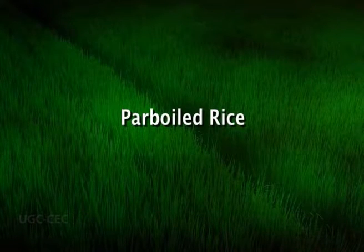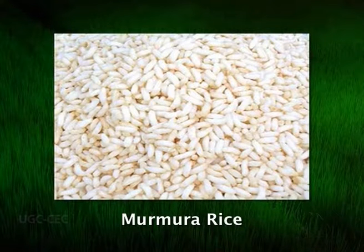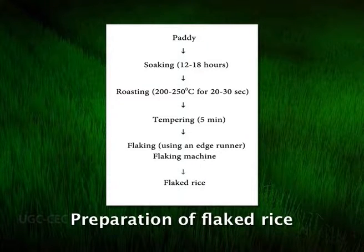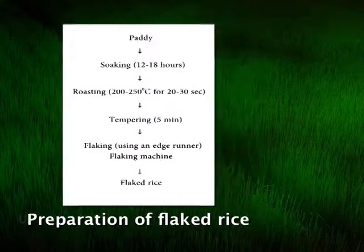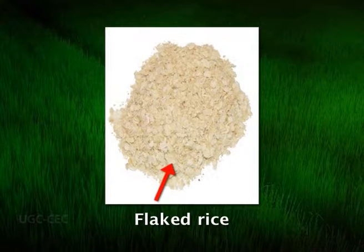Parboiled rice is prepared for making murmura by heating to a high temperature in an iron pan containing sand; a little rice is thrown into the heated sand and stirred rapidly until the rice cracks and swells. Flaked rice is thin, papery and off-white in color; it is eaten with suitable flavoring agents and forms a good breakfast food like corn flakes.